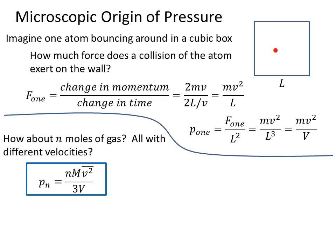So we get a result that's similar to the one for a single atom, but it's slightly changed. We can introduce a quantity that's commonly used called the root mean square velocity, that's V_rms. And that's equal to the square root of the average of the velocity squared.